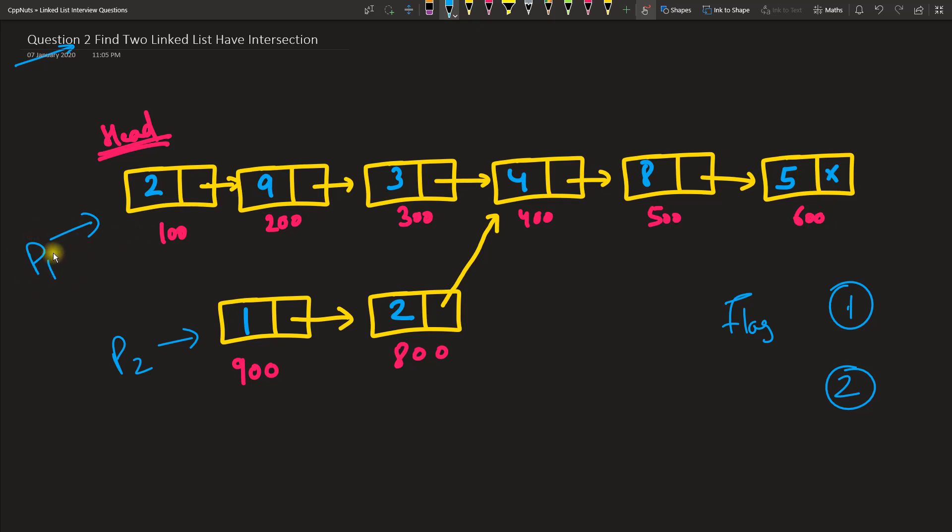Traverse this one, so reach this list till the end. Let's suppose you reached here, and now store this last node in some temp. You can store the last node or the address also, because address will be unique, right?